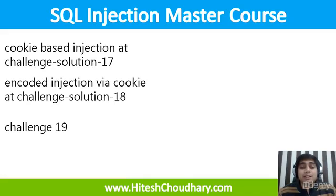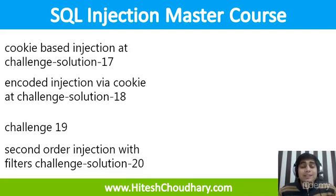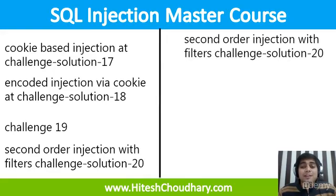Then we'll move on to challenge nineteen to test what you've learned so far — again very simple, 95% is already solved and just 5% requires your own problem-solving. After that, we'll move on to second order injection, which is quite popular and recently I reported one to Facebook — they accepted it and awarded a bounty of $1,000. You can also report bug bounties and win thousands of dollars with this. Then we'll cover second order injection with filters, and how to evade those filters in challenge solution twenty.